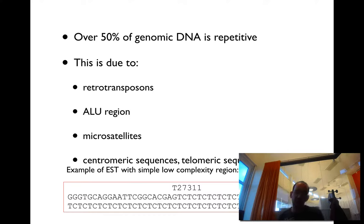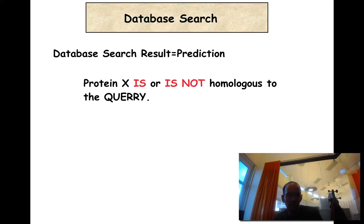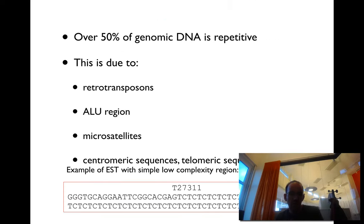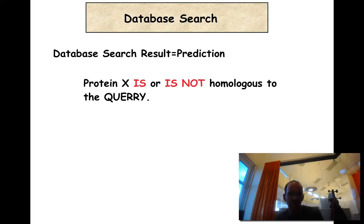For any sequence that has these kinds of regions, you can get very high-scoring hits. But that doesn't mean that they are homologous. So how do we deal with this? The question we want to ask in database searches is: is sequence X homologous or not to a query sequence? What you often do is filter these out — there are methods that can filter out these low-complexity regions.